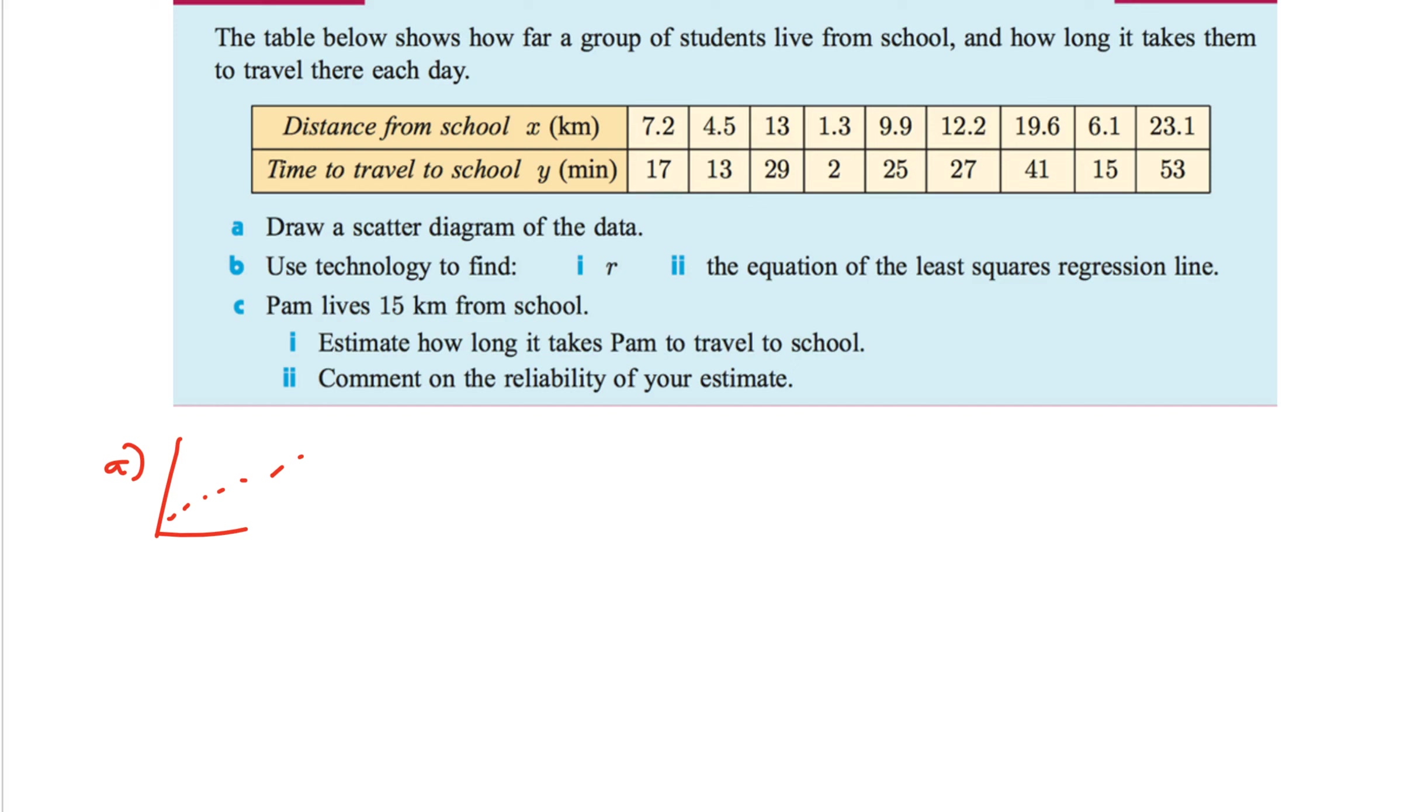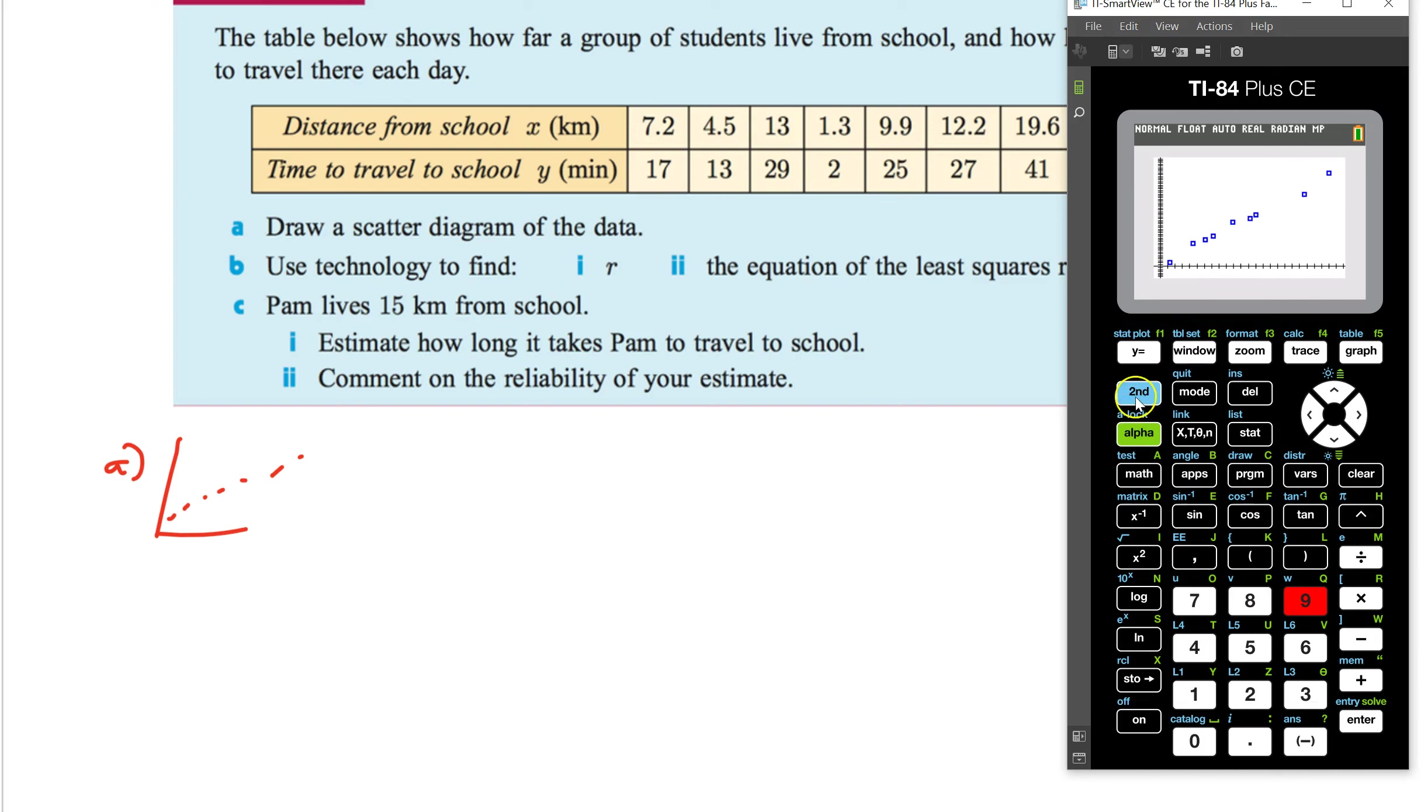Use technology to find the R in the equation of the least squares line. Now we're doing the same. We're actually doing the exact same move. You get out of this. Go to stat. Go to calculator. Go to linear regression. L1. L2. Again. There's no frequency list. So leave that blank. That's for graphing. We don't need a graph. So let's skip that. Go to calculate.